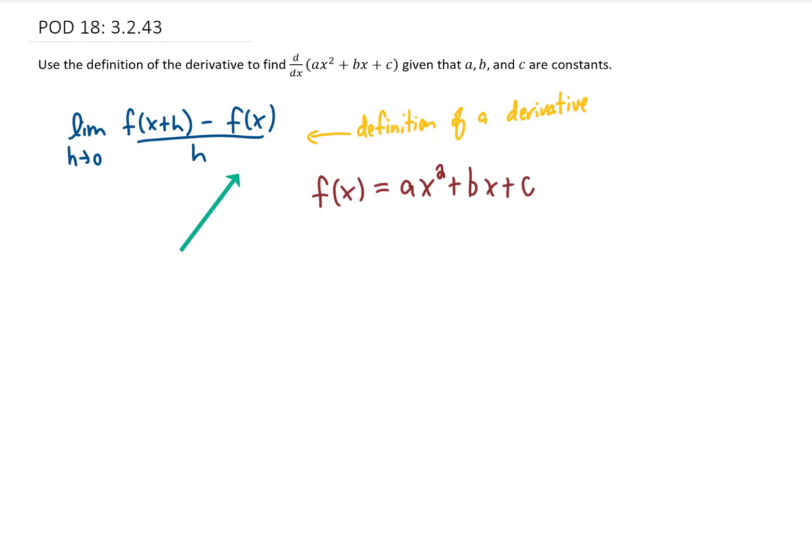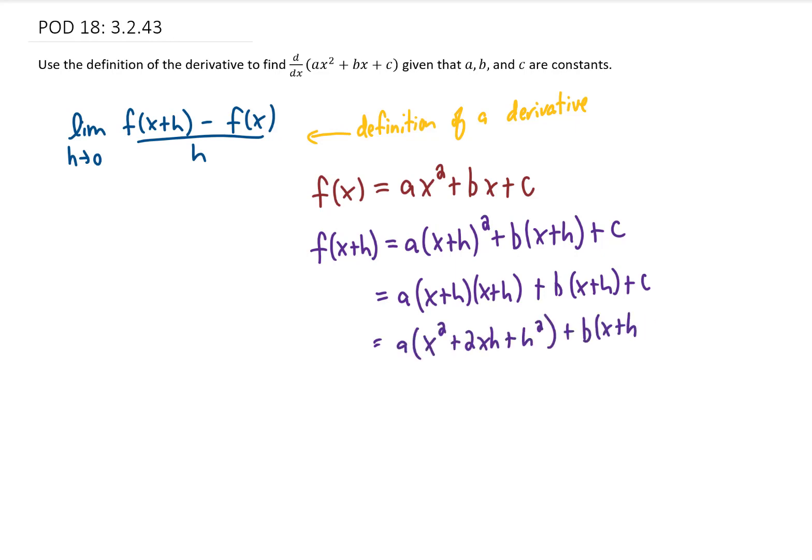Well, to use this definition of a derivative, we need to find f of x plus h. And we can find f of x plus h just by replacing x in this function with x plus h. Then squaring x plus h means we need to FOIL this term out. After doing all that distribution there and combining our like terms, we get that f of x plus h looks like this.